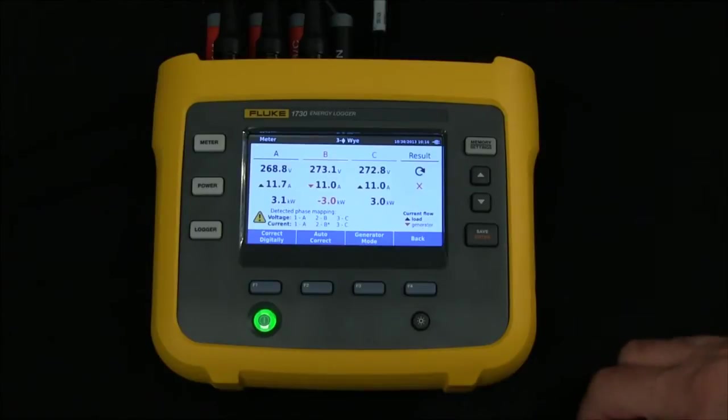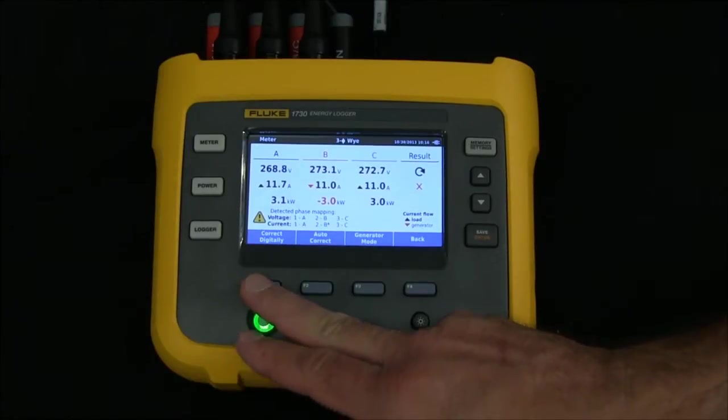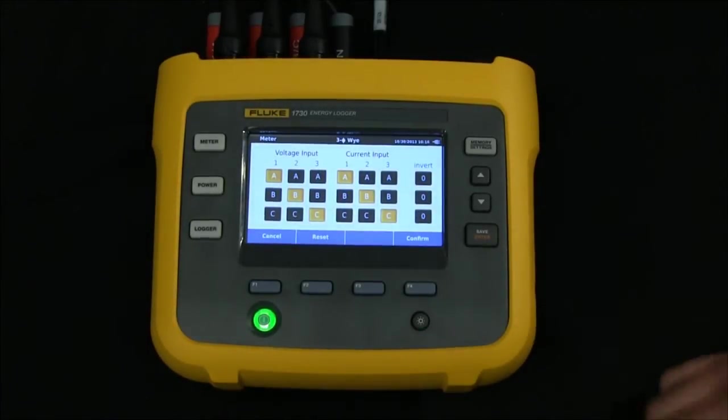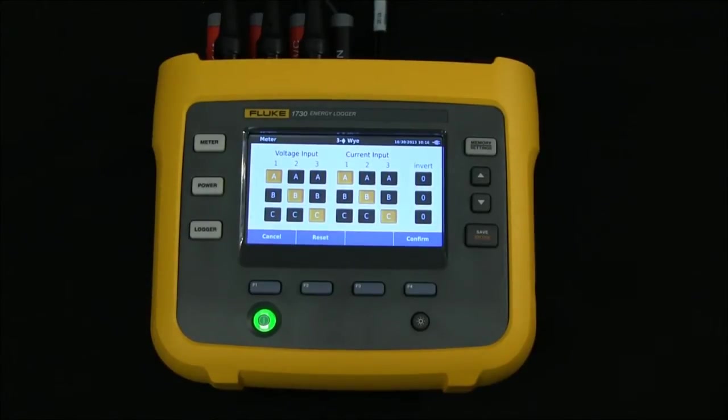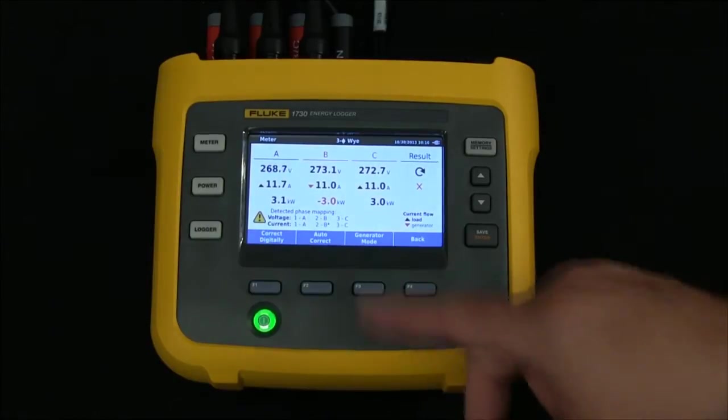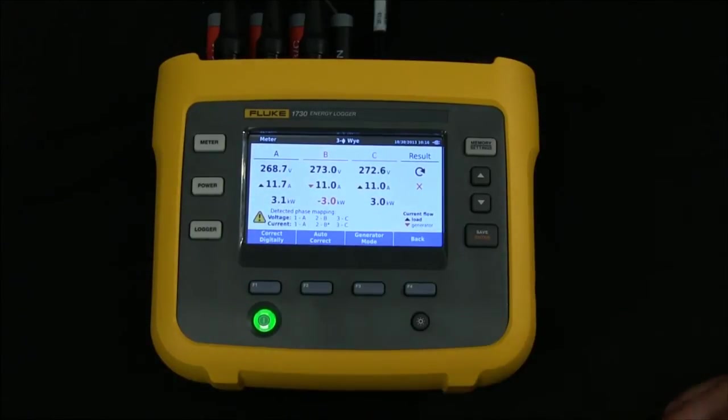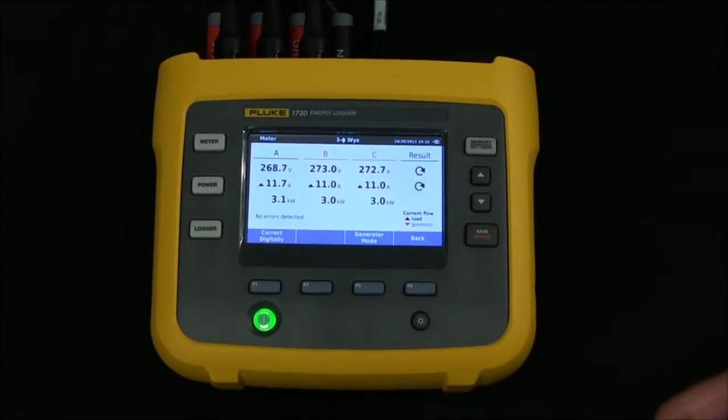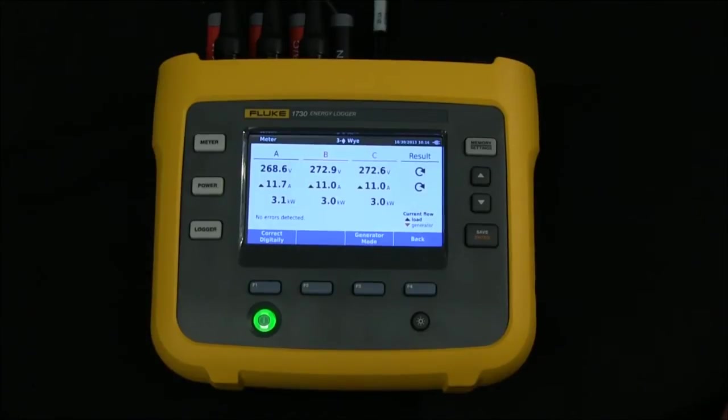I have two choices. I can go into correct digitally and manually make changes to the mapping, but if I don't really know what changes I need to make, I can go back and just hit auto-correct, and the unit will go in and make the changes for me, and then I'm ready to continue.